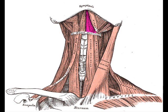It thus belongs to the suprahyoid muscles. The middle and anterior fibers are inserted into a median fibrous raphe extending from the symphysis menti to the hyoid bone, where they meet at an angle with the fibers of the opposite muscle. This median raphe is sometimes absent, and the fibers of the two muscles are then continuous.